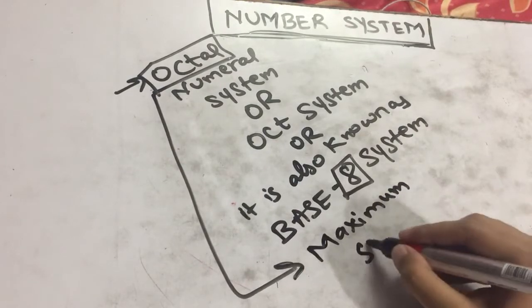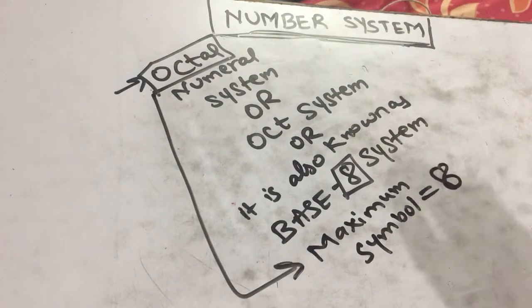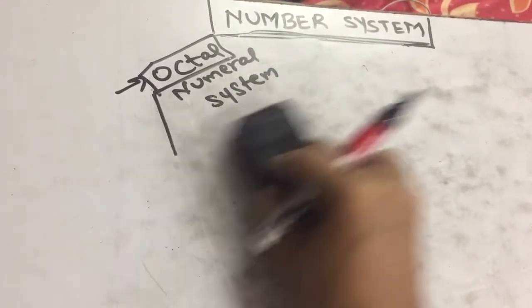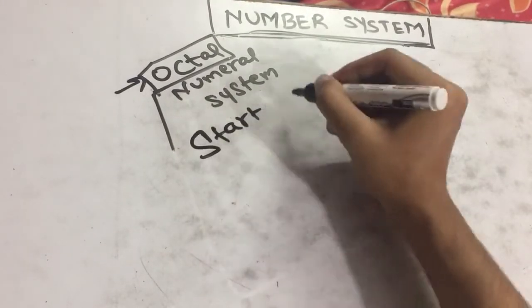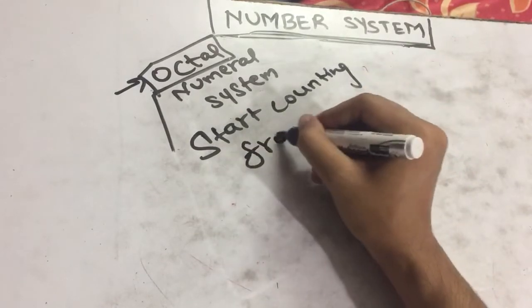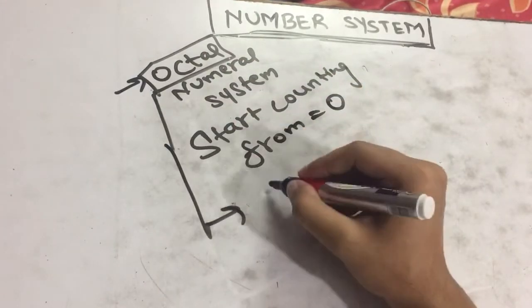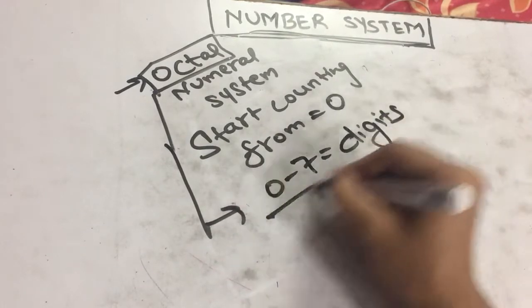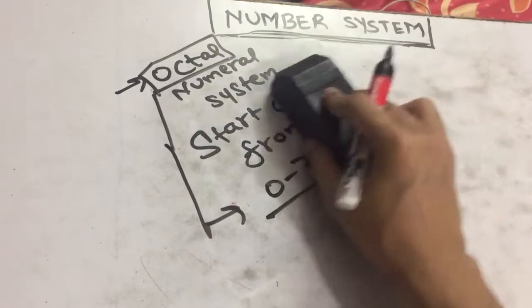In number systems we start counting from 0, so in octal number system we use 0 to 7 numeral digits. Now I will tell you about how to do the counting in octal number system.